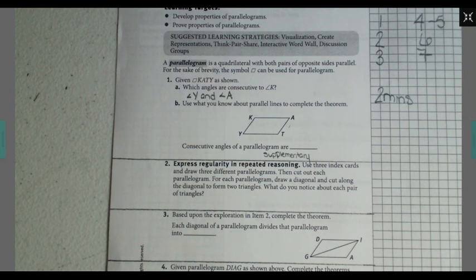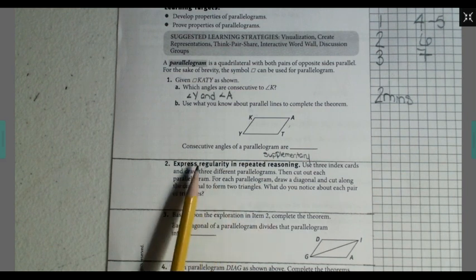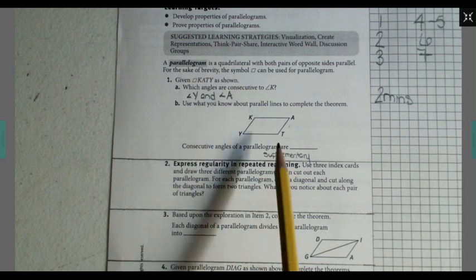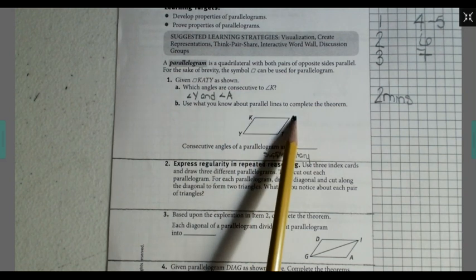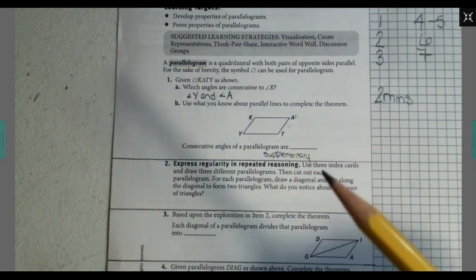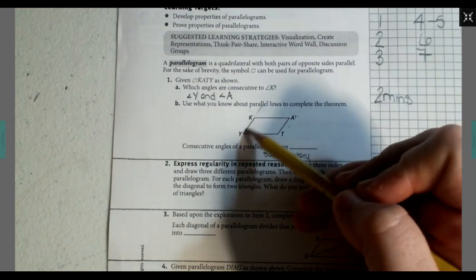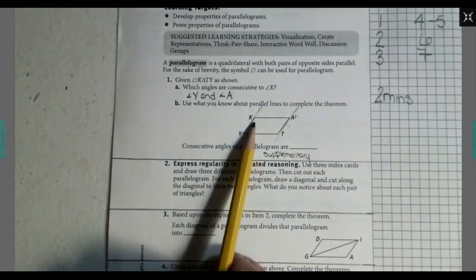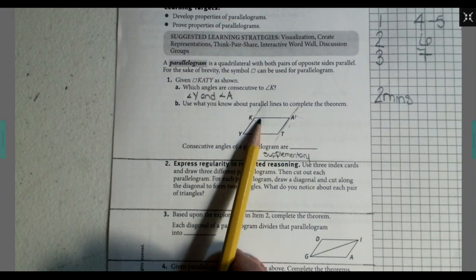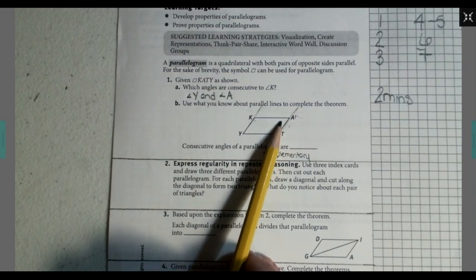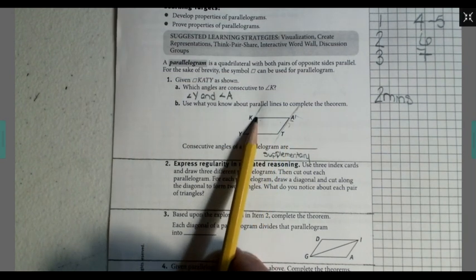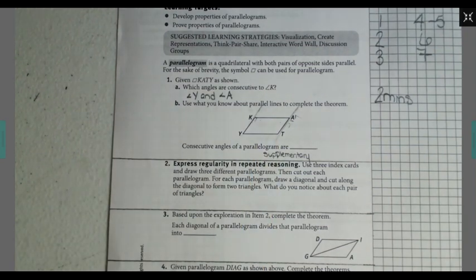It asks, what do we know about parallel lines to complete this theorem? Well, consecutive angles K and Y are consecutive angles. If my parallel lines are these two lines right here, these two angles are same side and in between the parallel lines, so interior, and we know that same side interior angles are supplementary. On to the next set of questions.